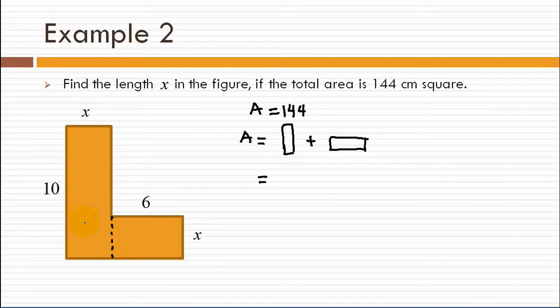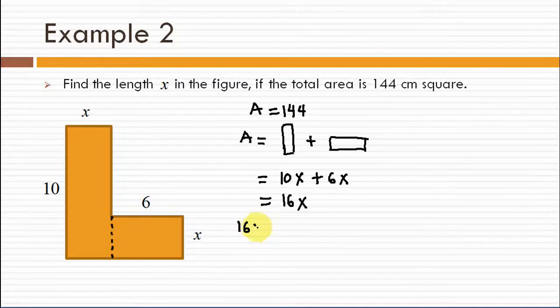What is the area of this rectangle? The area of this rectangle will be 10 times x, 10x and the area of this smaller one will be 6 times x. We can simplify this into 16x. So the area is 16x and at the same time the area is 144. Therefore, 16x must be equal to 144.